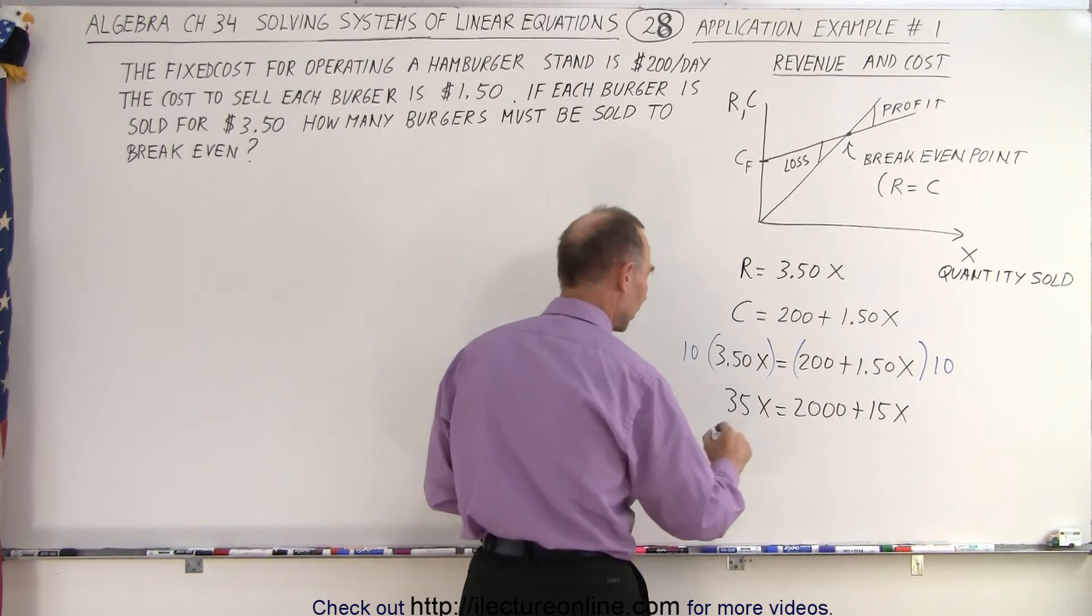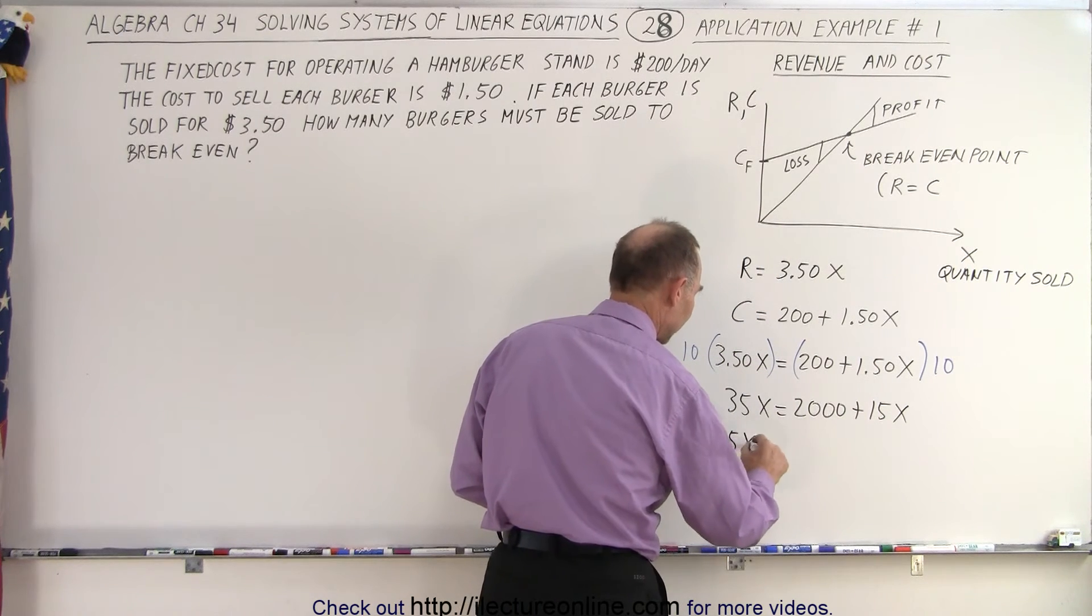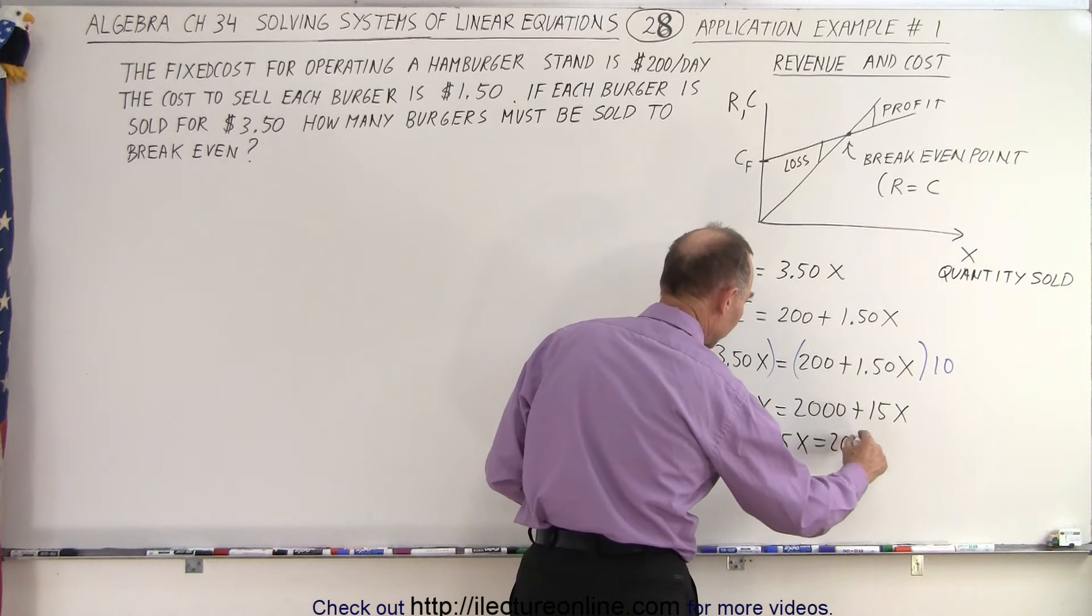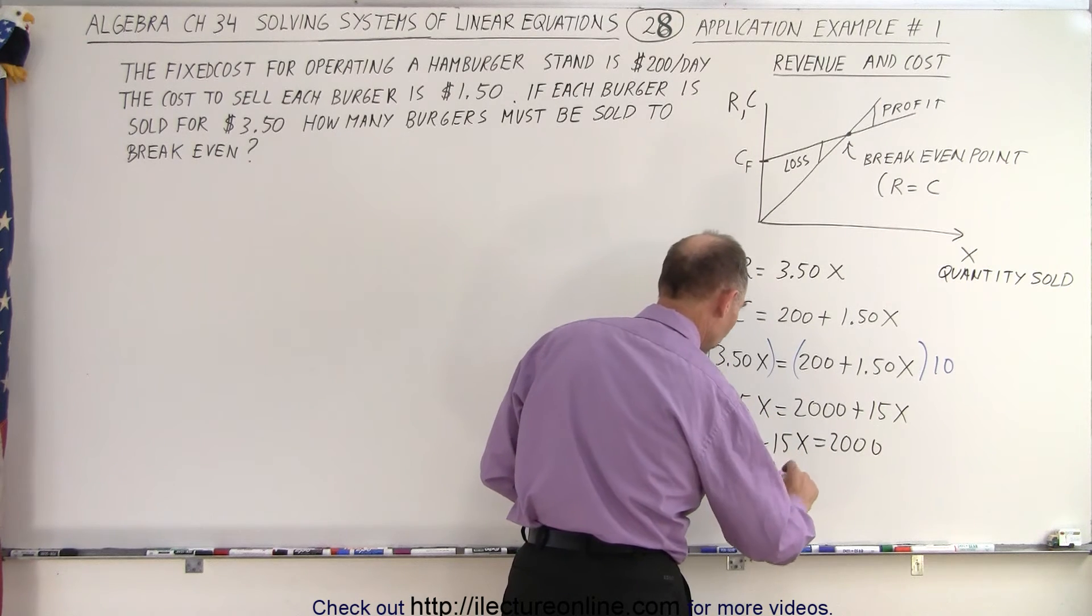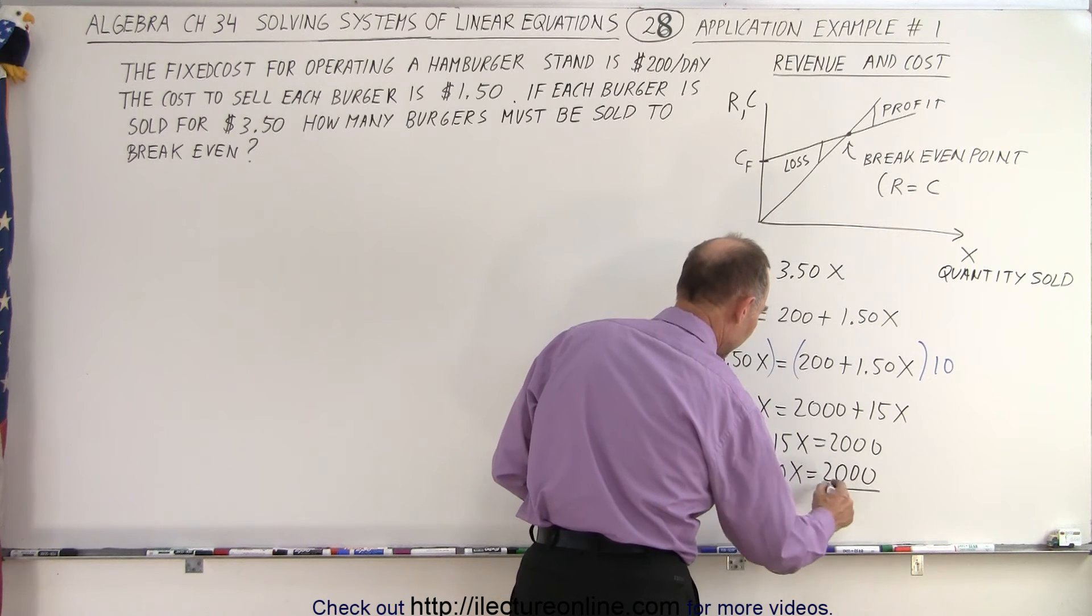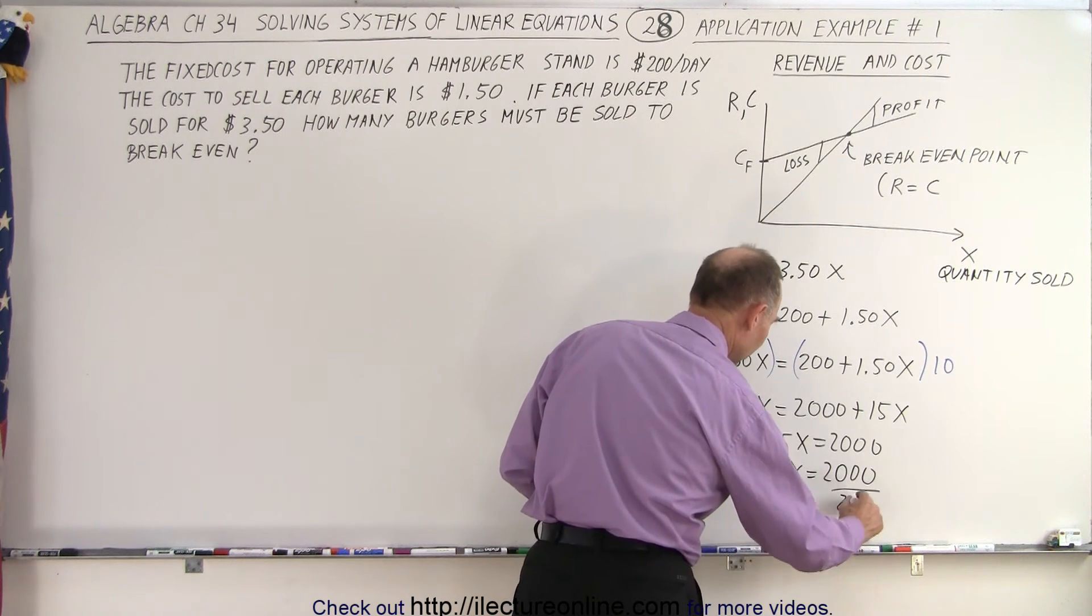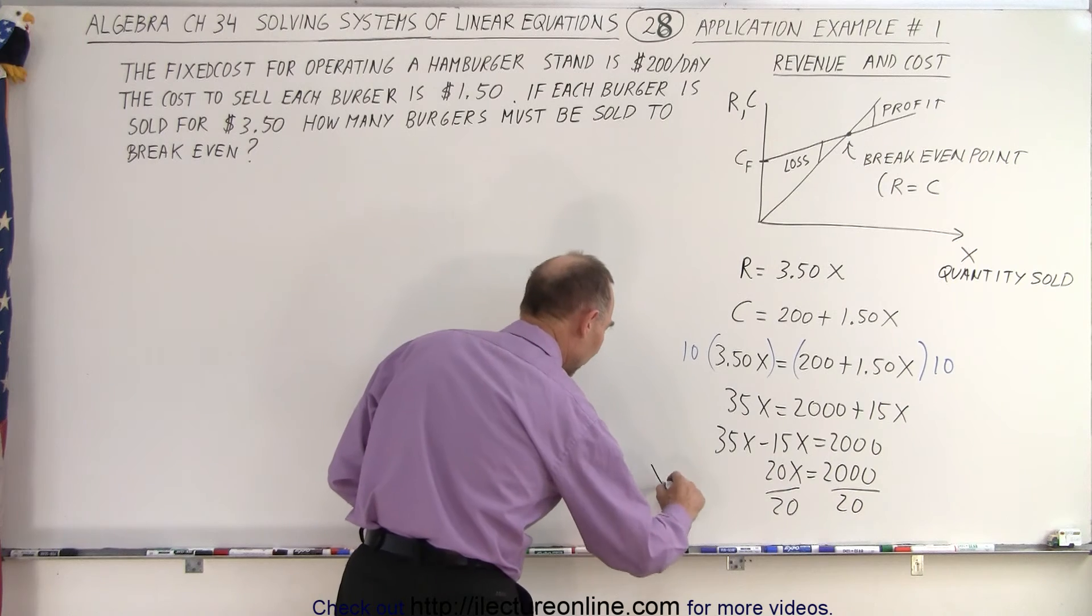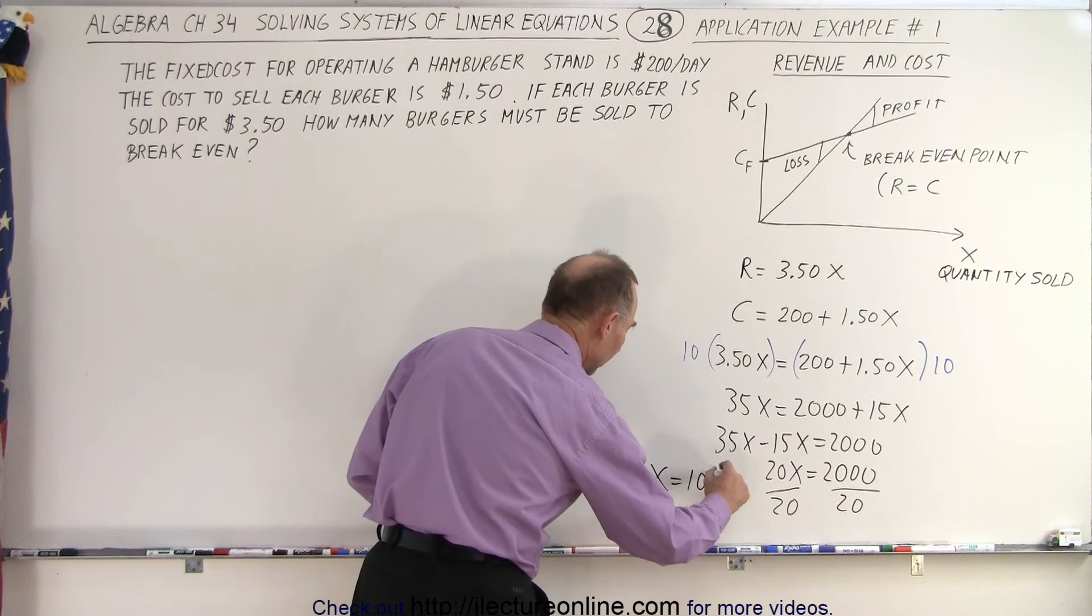Now we move all the x's to one side. 35x minus 15x equals 2,000, or 20x equals 2,000. And when we divide both sides by the numerical coefficient of x, that means that x is equal to 100.